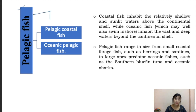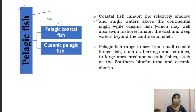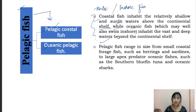Pelagic fishes are subdivided into pelagic coastal fishes and oceanic pelagic fishes. Pelagic coastal fishes inhabit relatively shallow, sunlit waters above the continental shelf. Oceanic fishes inhabit the deeper parts of the water beyond the continental shelf. Coastal fishes are also known as neritic or inshore fishes and include all forage fishes as well as predators.